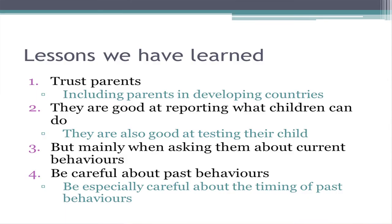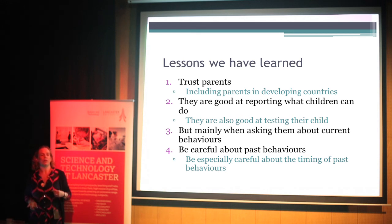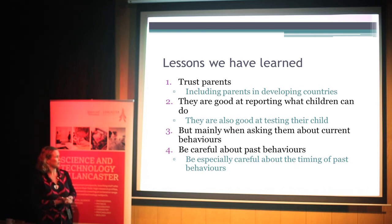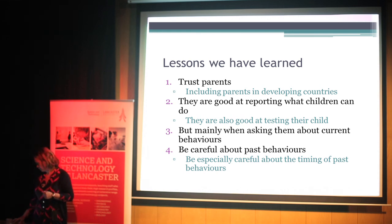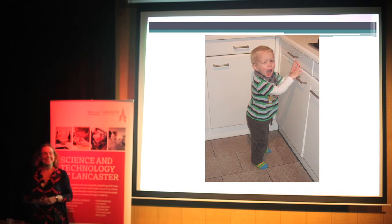So what have we learned? We've learned that we can trust parents — including parents who can't read and write in developing countries — they're good at reporting what their children can do. We've also learned they're good at testing their child. Tasks like building a block tower or hiding something correlate well with children's abilities when tested in the lab on similar tasks. But this mainly works when you're asking about current behaviours. Be very careful about past behaviours, and be especially careful about the timing of past behaviours. That's the end.